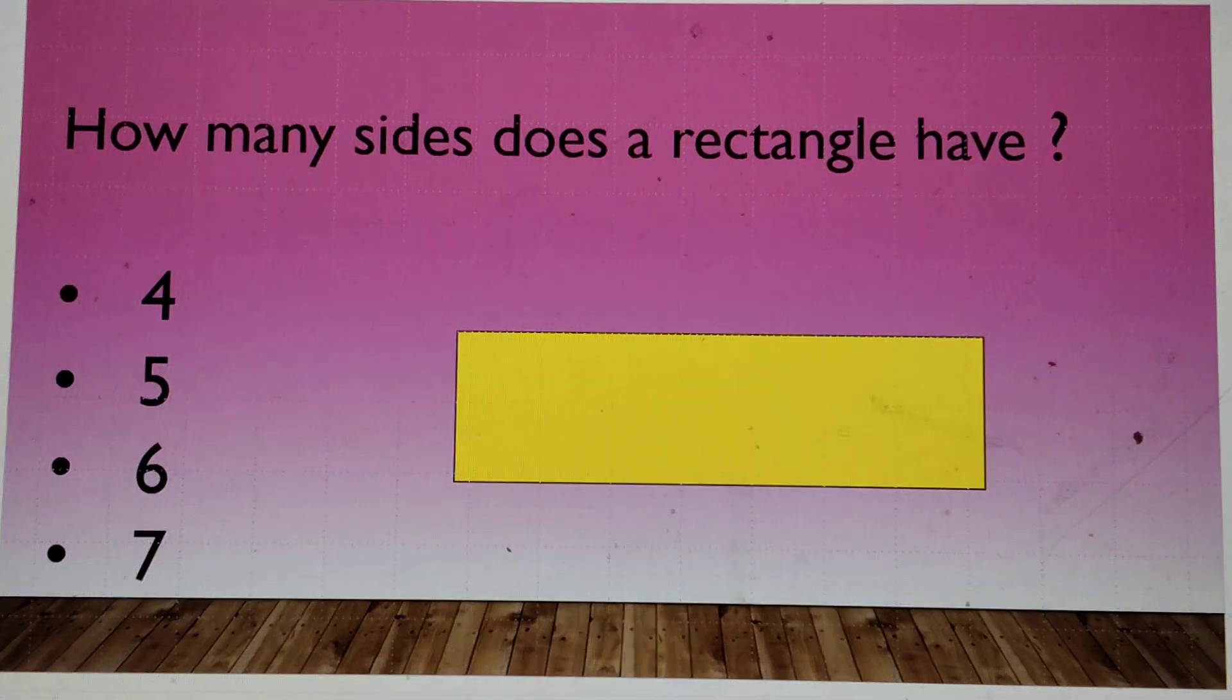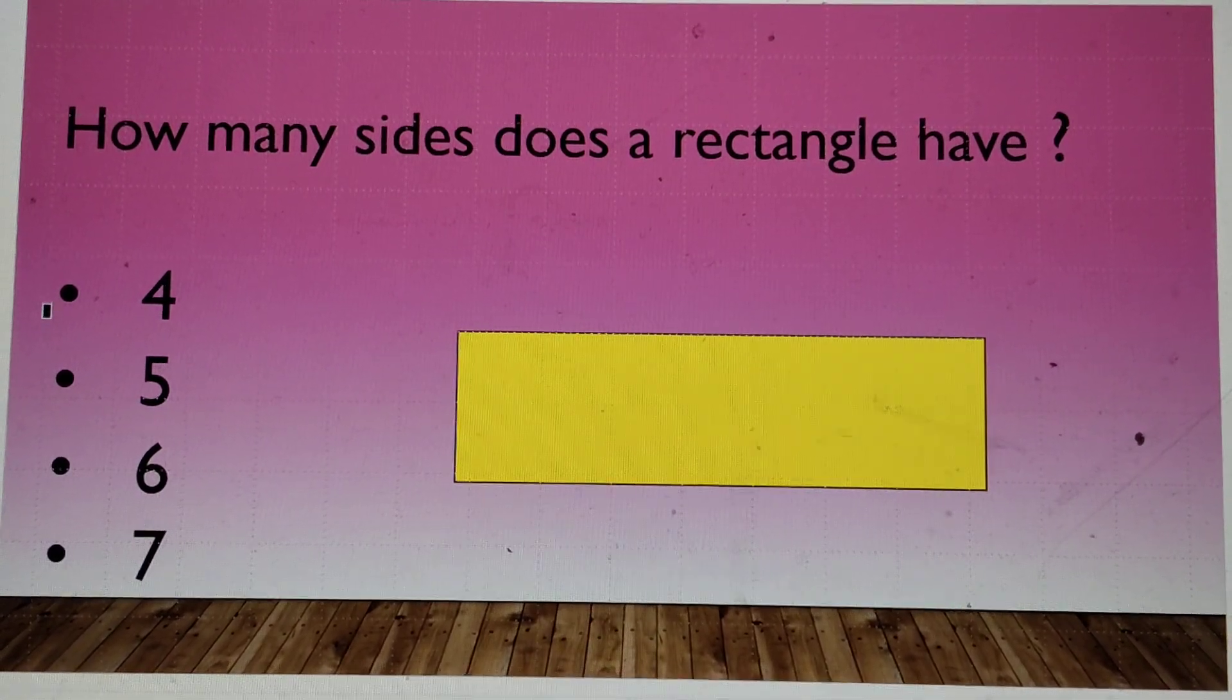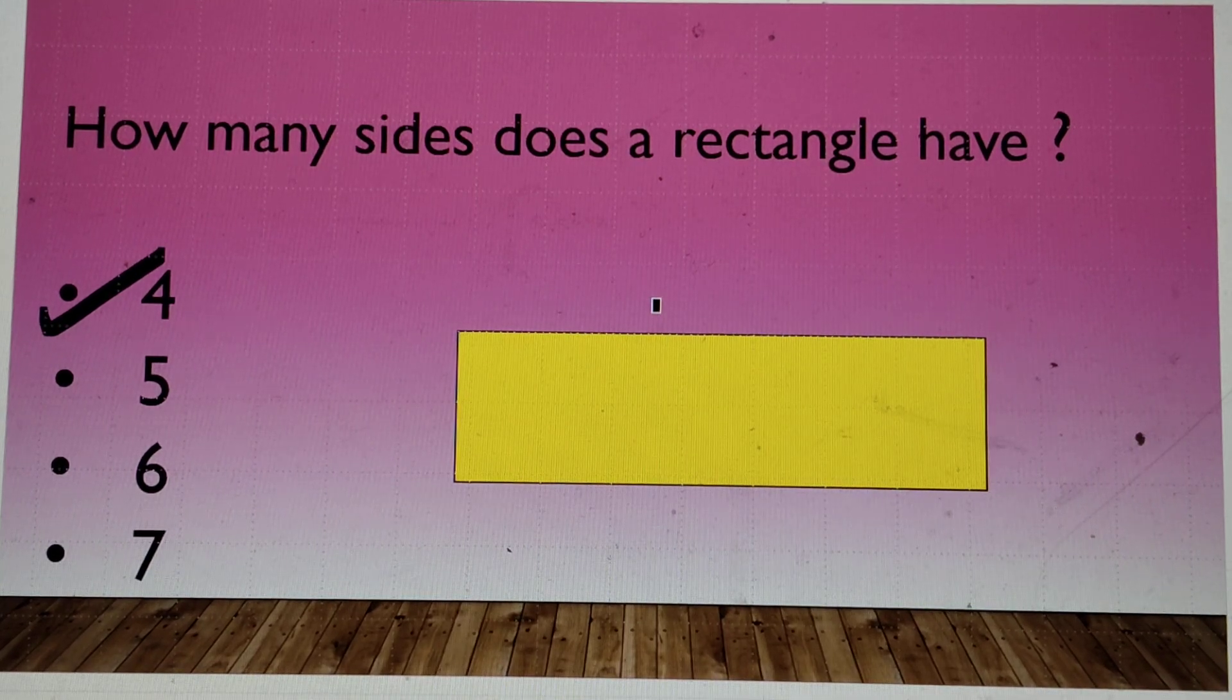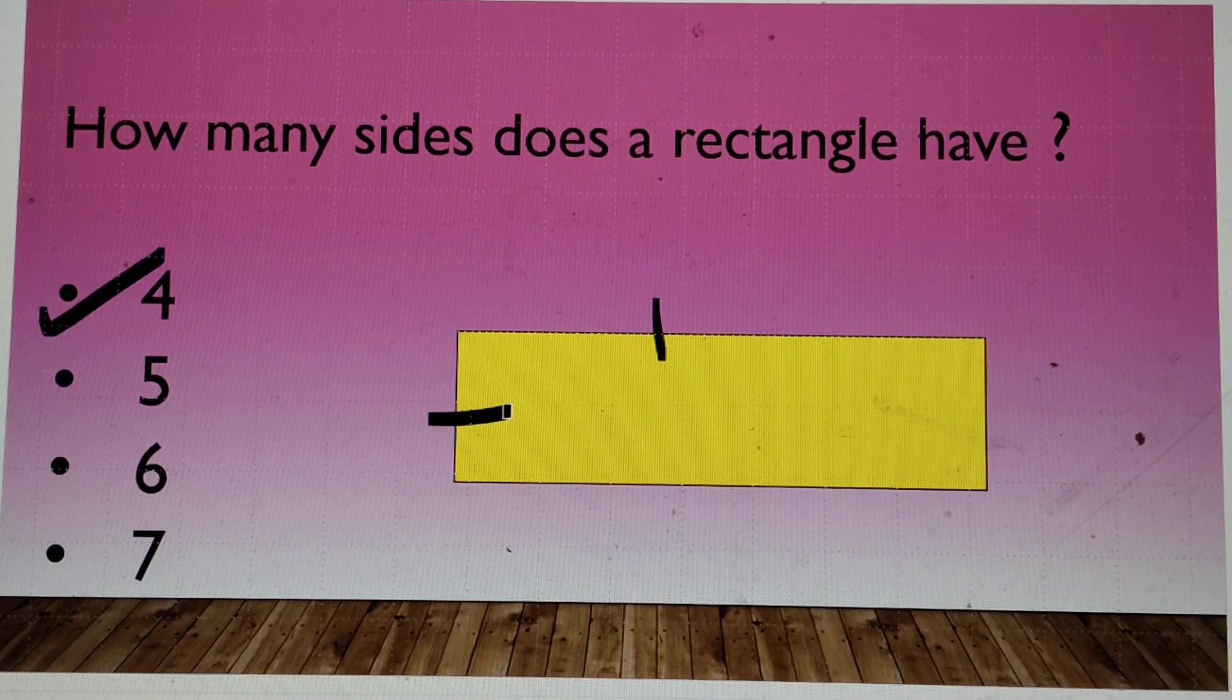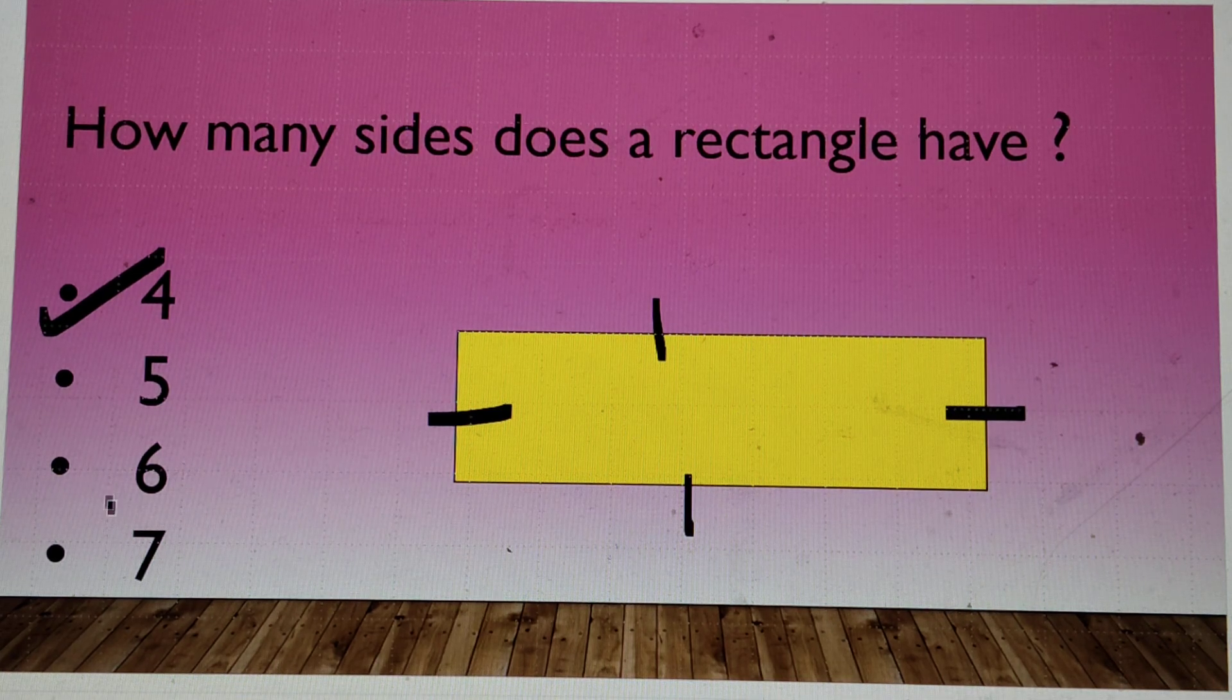How many sides does a rectangle have? 4, 5, 6 or 7? 4. Let's count. 1, 2, 3 and this is 4. 4 sides.